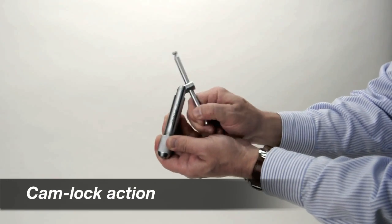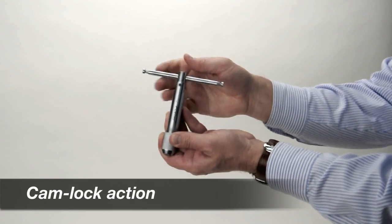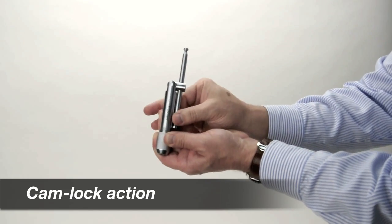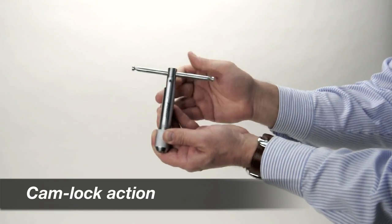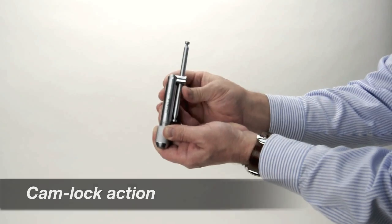The patented cam lock action of the TAP-X is engaged by using the T-bar handle. When the handle is parallel to the wrench body, the cam lock is off. When the T-bar is perpendicular to the wrench body, the cam lock is on.